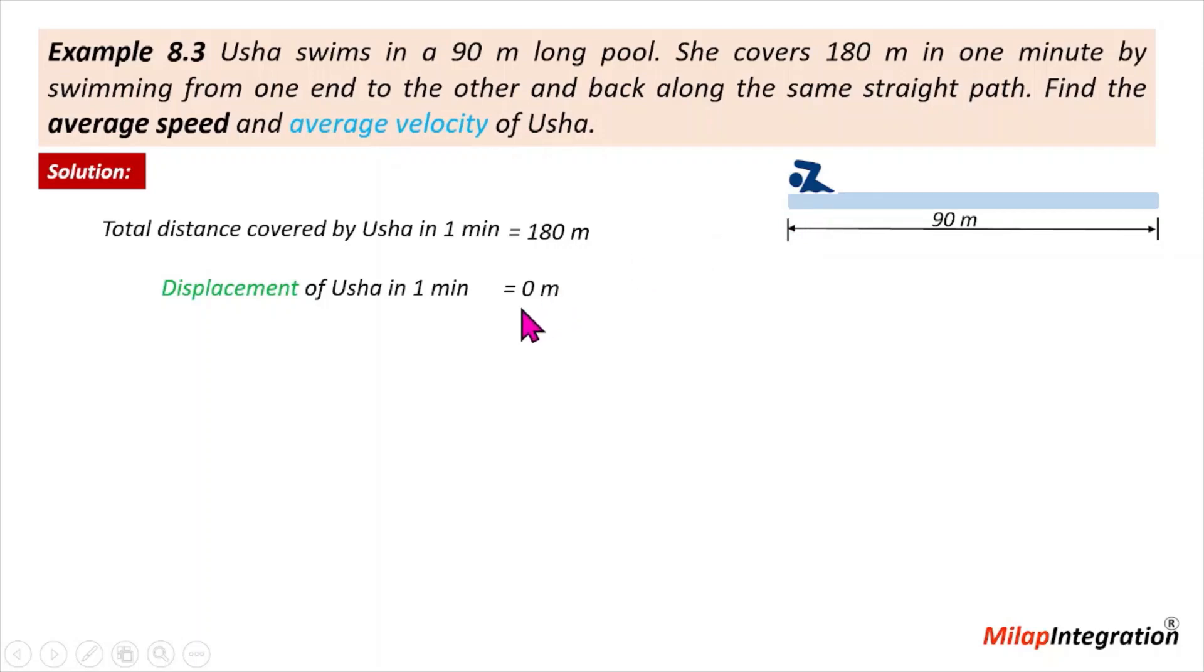This means the shortest distance between the initial and the final position. That is the displacement. The shortest distance is zero.